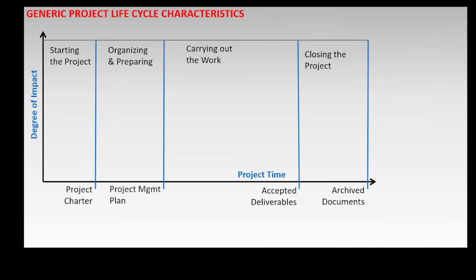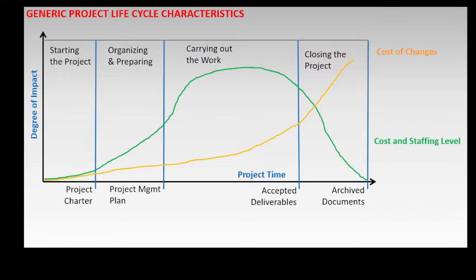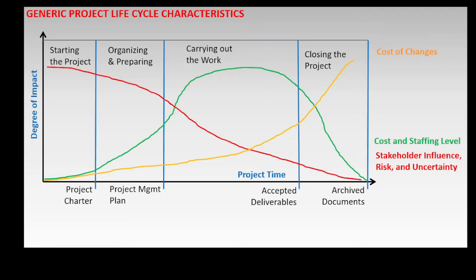The generic project life cycle characteristics are: cost of changes, which is lowest when starting the project and increases as the project progresses; project cost and staffing levels, which are low at the start of the project, maximum when carrying out the project work, and could decrease during project closure; and stakeholder influence, risk, and uncertainty, which are higher at the start of the project and decrease as the project progresses.